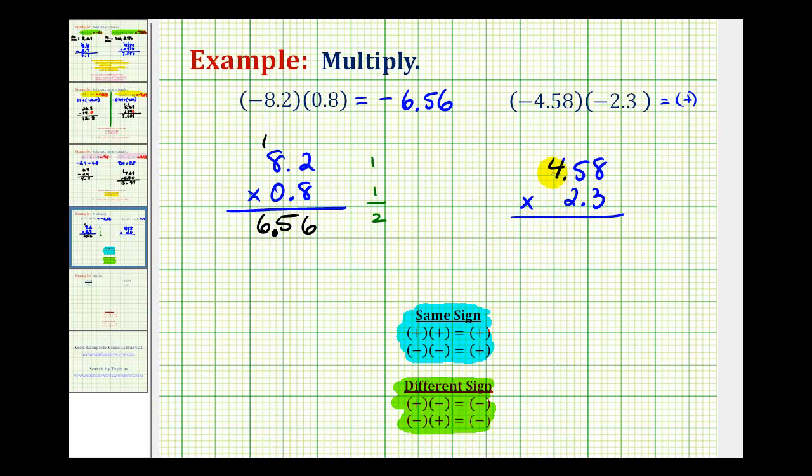Notice how this first decimal has two decimal places, the second one has 1, and 2 plus 1 is 3, so our product must contain three decimal places. Knowing that, we can now multiply, ignoring the decimals.